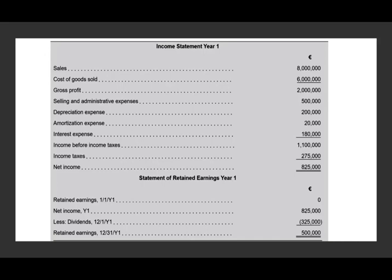This is what their Italian income statement looked like. Sales were 8 million euros, cost of goods sold 6 million, gross profit 2 million. Then they had selling and administrative expenses of 500,000, depreciation expense, amortization expense, interest expense, income before taxes, income taxes paid, and net income of 825,000 euros. Beginning retained earnings is zero since the company did not exist prior. Net income of 825,000 euros minus the 325,000 dividend gives ending retained earnings of 500,000 euros.